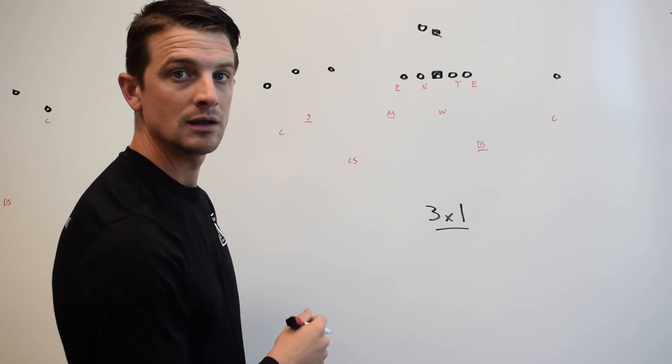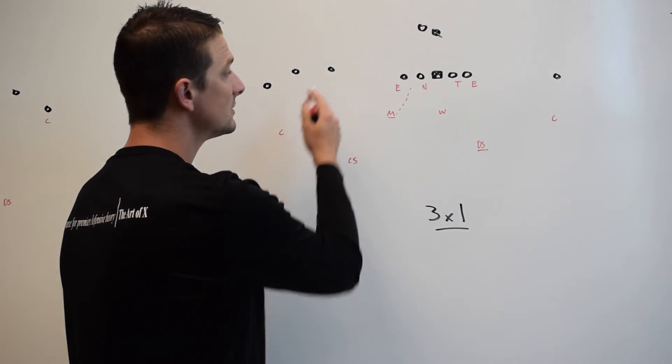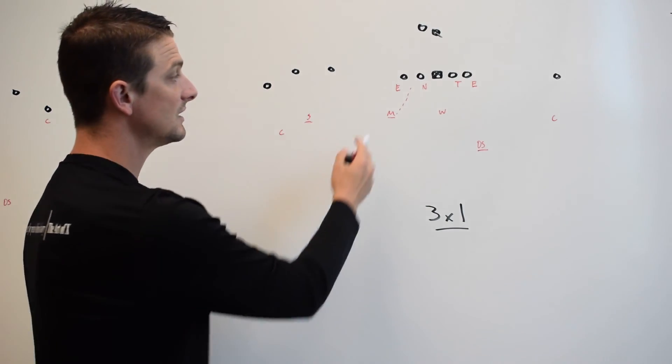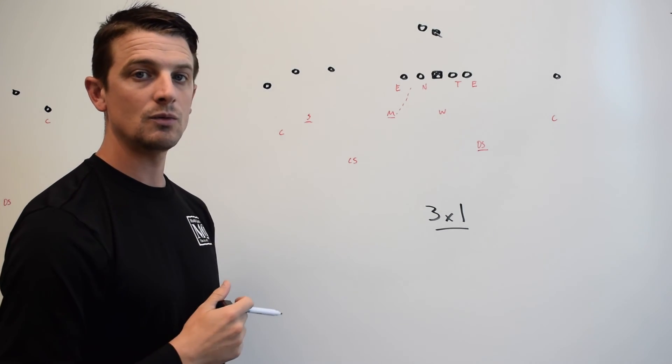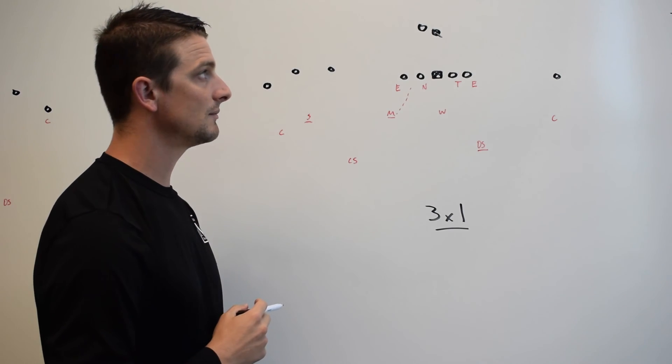Now, your conflict player is your Mike. The conflict player, because he has to fold into the B gap, and he also has to cover down to the number 3 receiver. He's going to be in a hip alignment, much like we saw the Will linebacker be in hip alignment in 2x2, and he is now relating to the number 3 receiver.